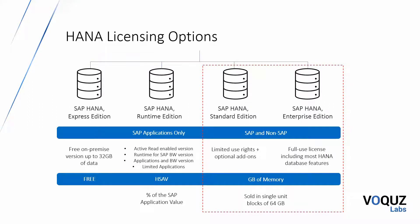The SAP HANA Express Edition is a free on-premise solution for production and development, up to 30 gigabytes of data. The Runtime Edition is for SAP applications only and there are four different flavors: Active Read Enabled, Runtime for SAP BW, Runtime for SAP Applications and BW, and Limited Applications. The Runtime Edition is sold on a metric called HSav, which is a percentage of the SAP application value to be deployed on the HANA database.